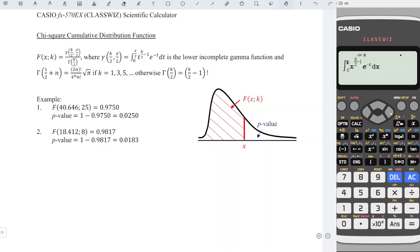Write, upper limit x over 2. Critical value for this case is 18.412 divided by 2. Press equal, obtain the value, store to A.